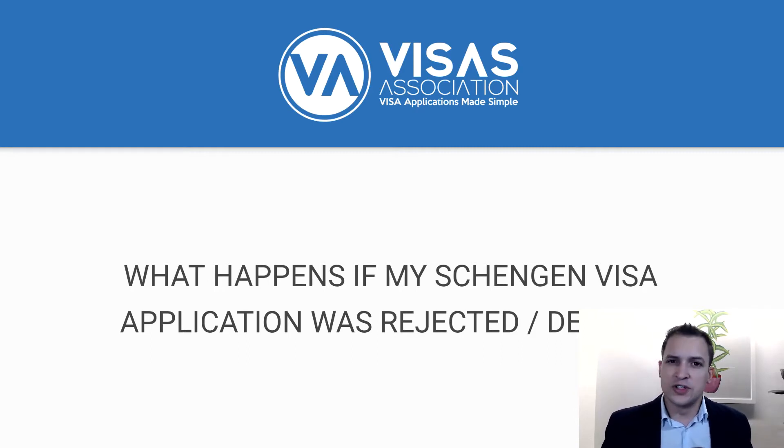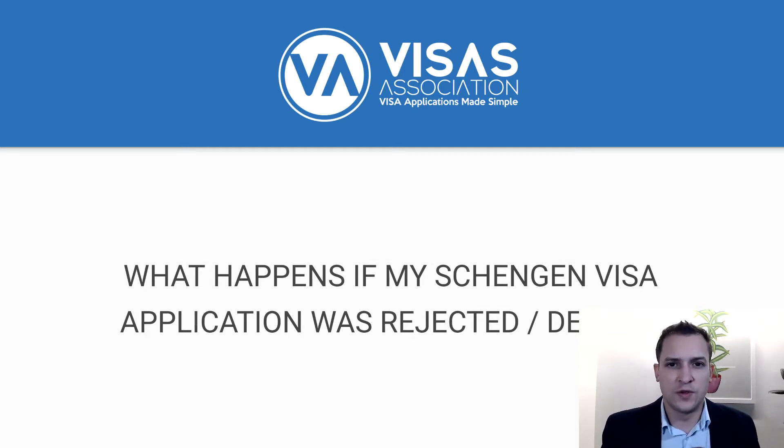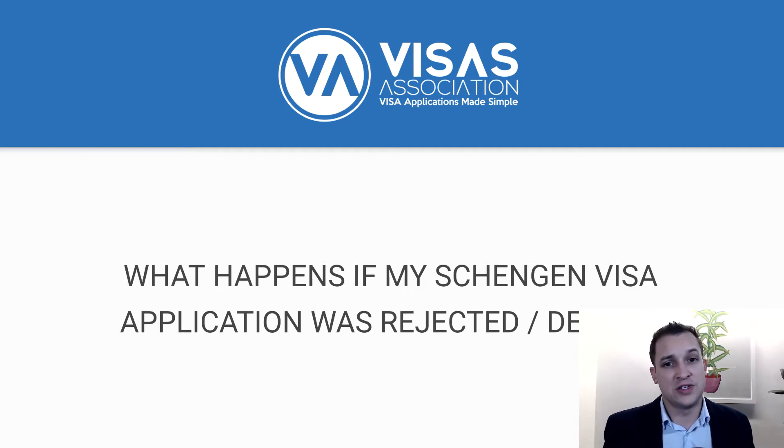Unfortunately, a lot of consulates and embassies don't come out and tell you exactly why your application was rejected or refused. It's kind of up to you to understand why something was missing or why it was assessed that you weren't an appropriate candidate to enter the Schengen region. So step number one is try and figure out why. Go back to your requirements and see what document you could be missing. Go back to all of your important documents like your passport, birth certificate, and all documents you provided photocopies of, and make sure you provided valid, notarized or certified copies.